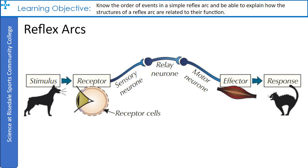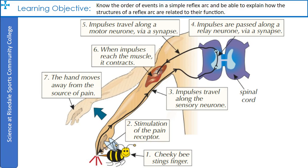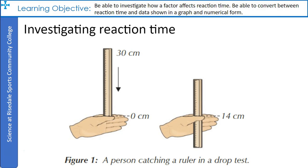The impulse then travels along the motor neuron to the effector, which is usually a muscle. If the effector is a muscle it will respond by contracting; if it's a gland it will secrete a hormone. Because you don't have to think about the response, a reflex is quicker than a normal response. For example, if a bee stings a person, the reflex response is that the hand moves away from the source of pain. The pain receptor sends an impulse along the sensory neuron, which passes along the relay neuron via a synapse, then along a motor neuron via another synapse, causing the muscle to contract and the hand to move away.